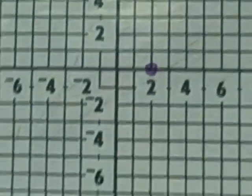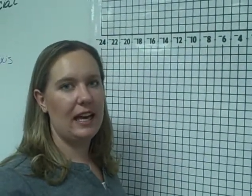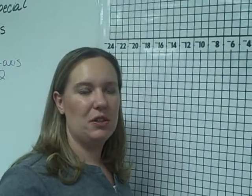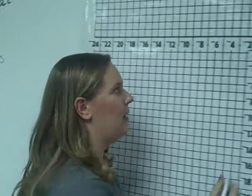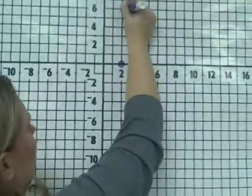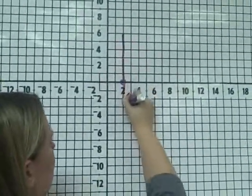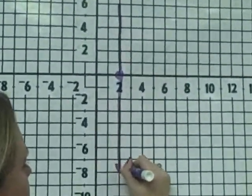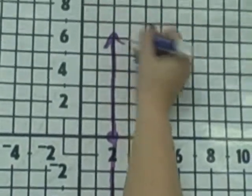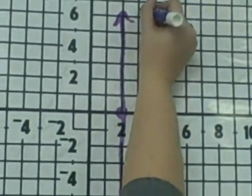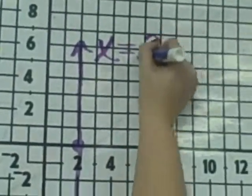And from this dot, we're going to draw a line that crosses the x-axis. So if it's going to cross the x-axis, it is going to go vertically or up and down. And that's how you would graph the equation x equals 2.